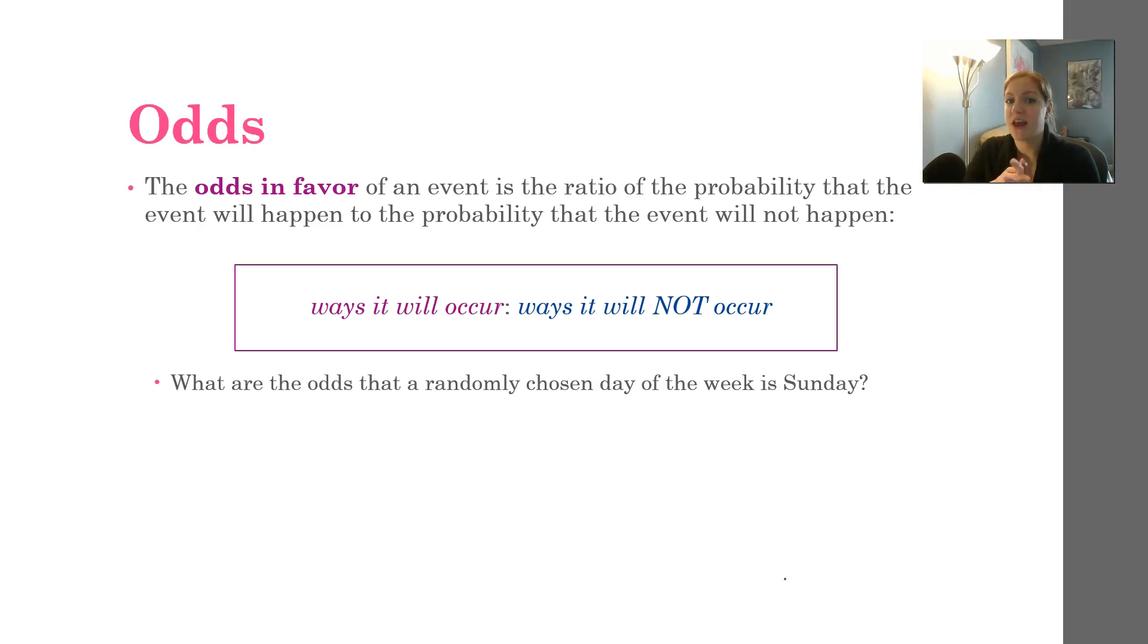So, what are the odds that a randomly chosen day of the week is Sunday? Well, you'd have to go ahead and look at how many days are Sunday. There's only one, right? So that would be your first number. And then how many numbers are not Sunday would be your second answer. Well, there's six other numbers that would not be Sunday. So, one to six.